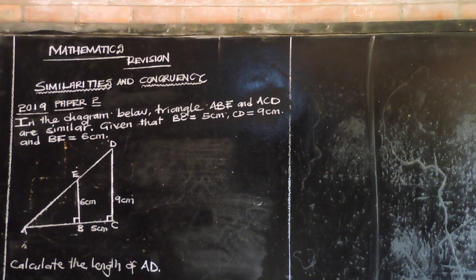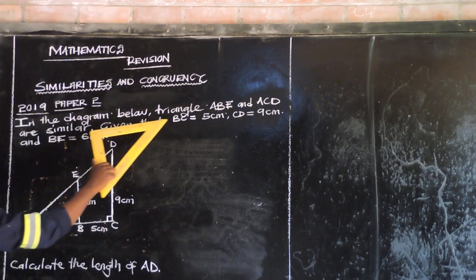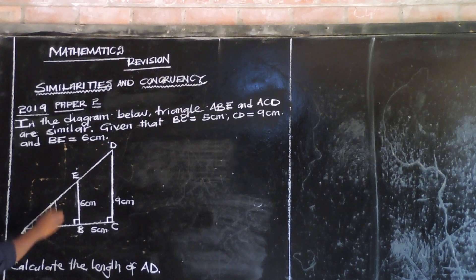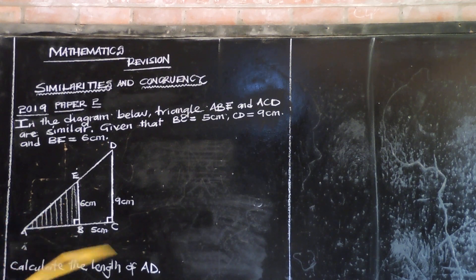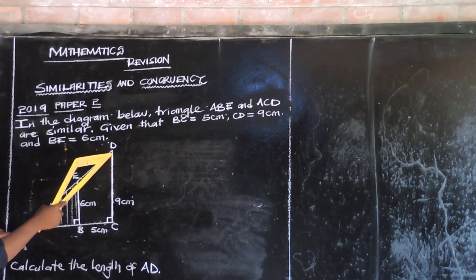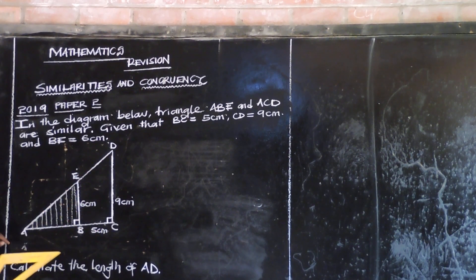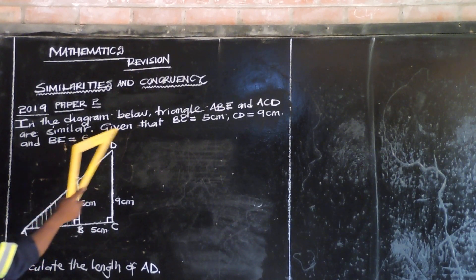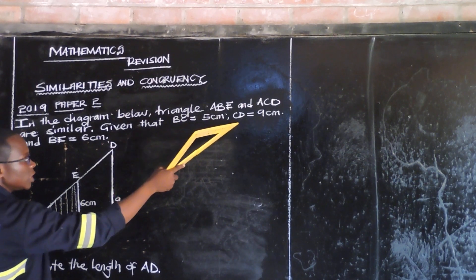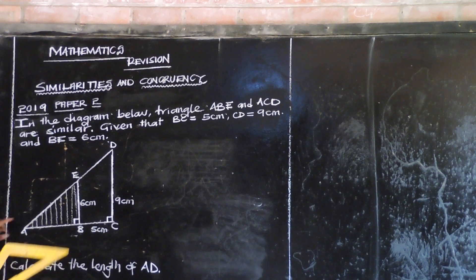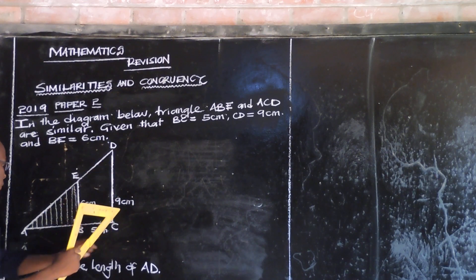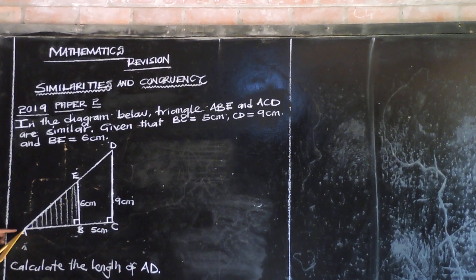Let us look at the 2019 paper 20. In the diagram below, Triangle ABE and Triangle ACD are similar. Given that BC is equal to 5cm, CD is equal to 9cm, and DE is equal to 6cm. We have been asked to calculate the length of AB.